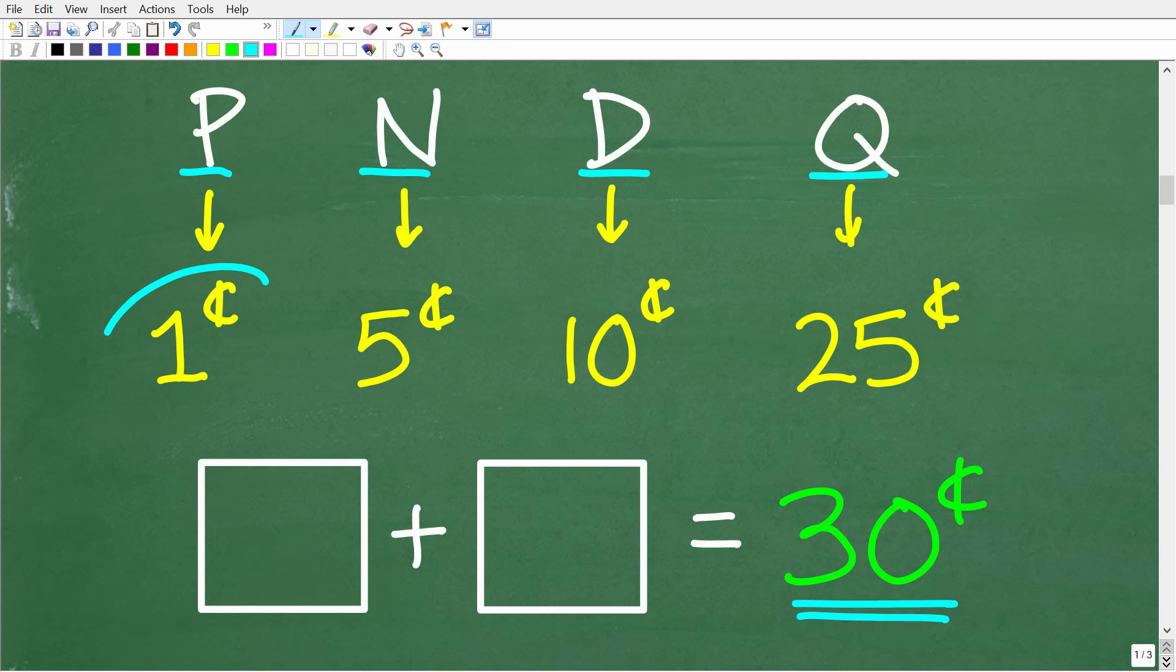So how can we get 30 cents from two coins? Well, if we have a penny and we add it to a nickel, well, that is going to be six cents. So that's impossible. If we have a nickel and we add it to a dime, we'll get 15 cents. So that's not going to work either. So if we have a dime and a quarter, we get 35 cents. So that's too much. So there's really only one way we're going to get 30 cents here.